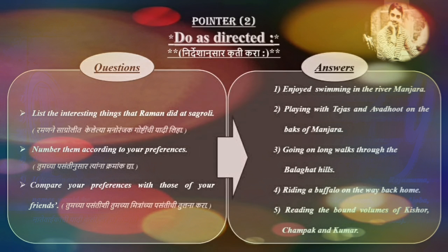Number two: According to your preferences, Tumcha Pasanti Nusar Tiana Kramanka Dya, compare your preferences with those of your friends. Answers: First, enjoy swimming in the river Manzra. Second, playing with Tejas and Avadut on the banks of Manzra. Third, going on long walks through the Balaghat Hills. Fourth, riding a buffalo on the way back home. Fifth, reading the bound volumes of Kishore, Champak and Kumar.